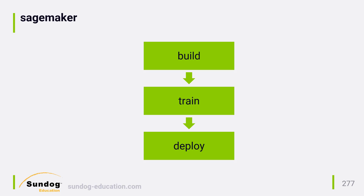You can kick off the training of your model from that same notebook, or from the AWS console by setting up a training job. Your training and test data need to be in a specific format called ProtoBuf, but Amazon provides utilities that make it easy to convert your data into this. One neat feature of SageMaker is that you can also set up hyperparameter tuning jobs, which will automatically run a series of cross-validation tests to converge on the best parameters for your model.